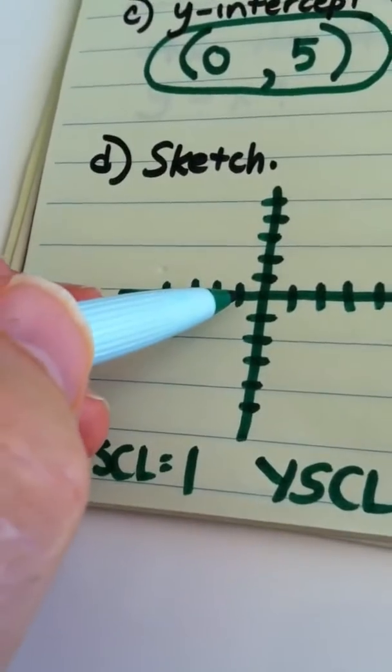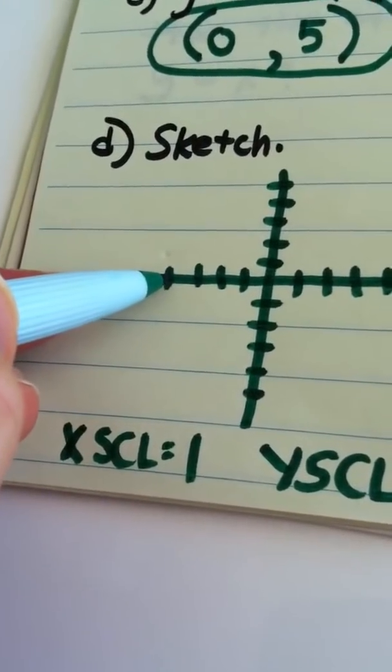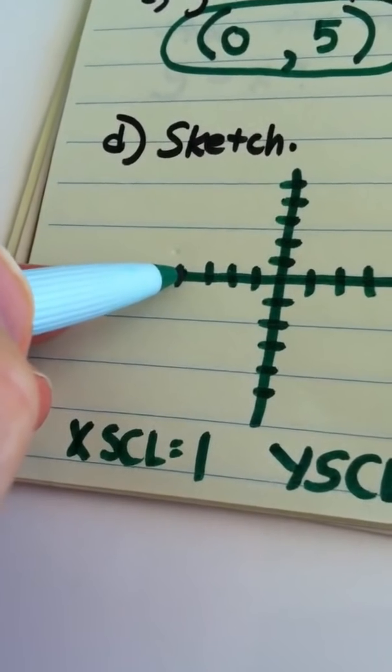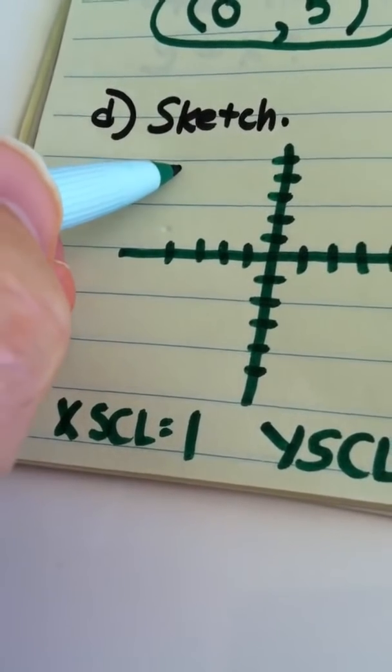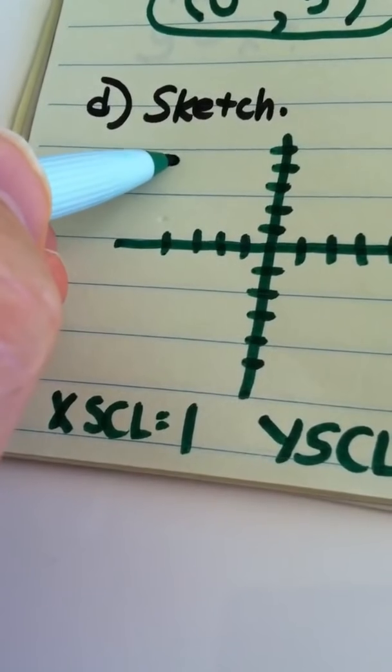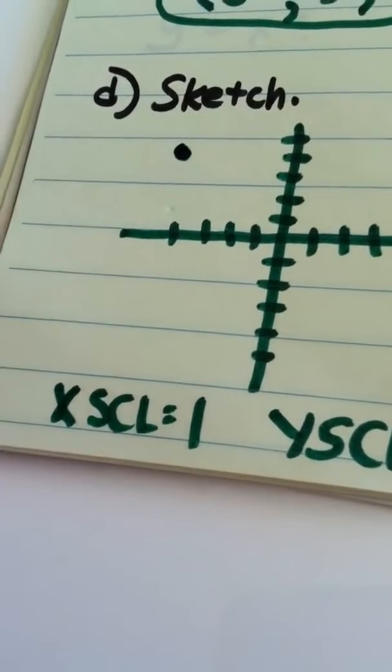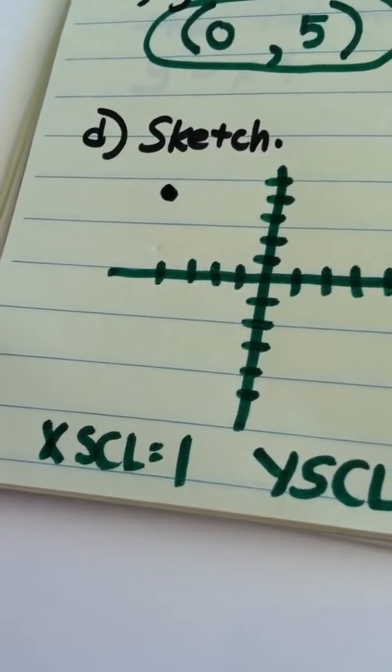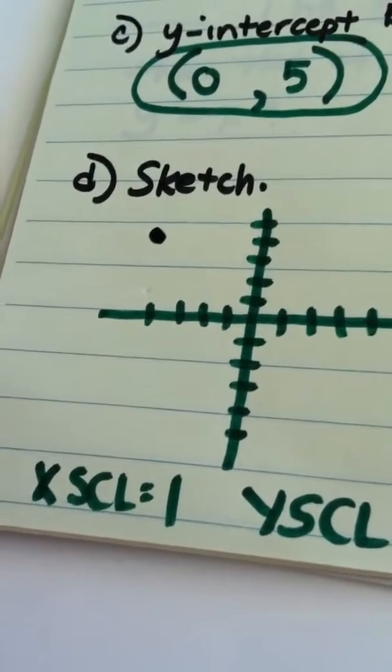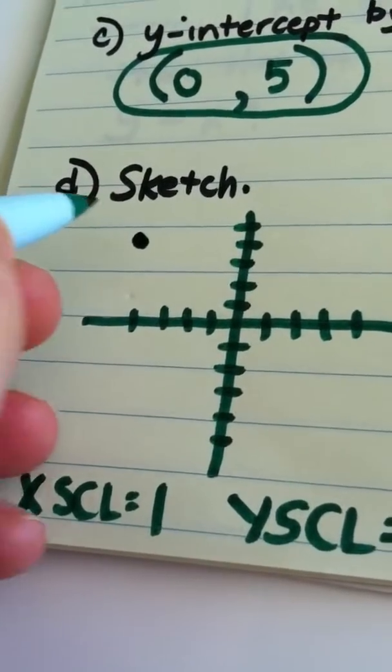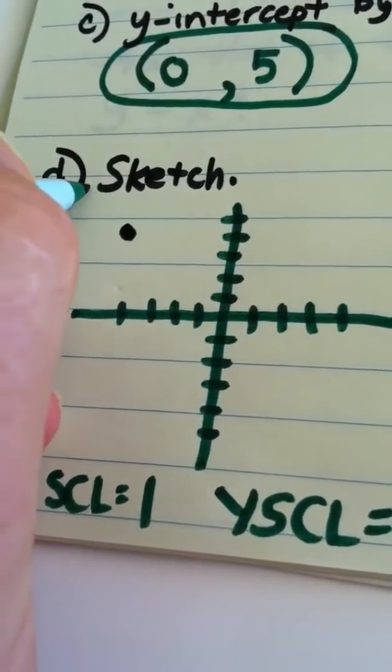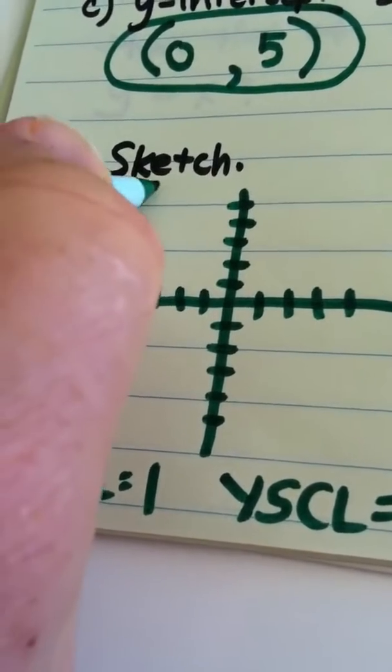So negative 4, negative 4, 21. But we count by 5s: 5, 10, 15, 20 and a little past that. Okay, that is our vertex, the ordered pair negative 4 comma 21.